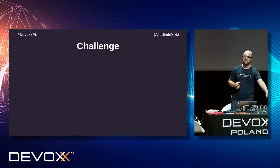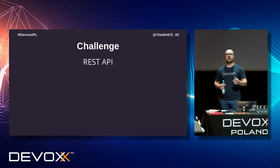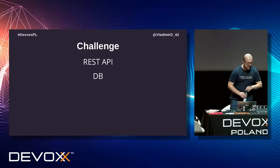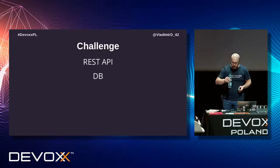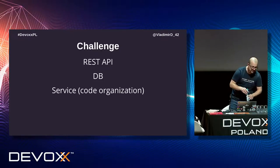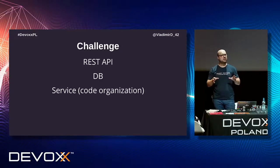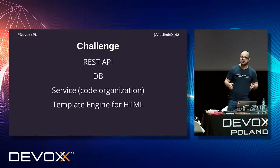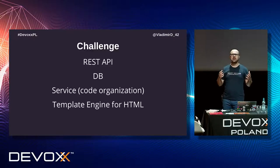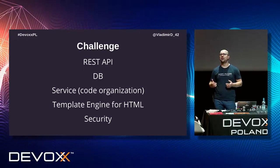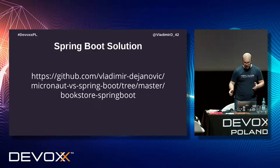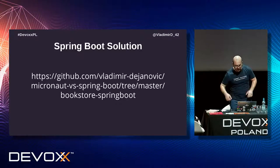I created a small challenge that consists of the following: I want to build a REST API. Second, I want to have a database - because if we don't have a database, what kind of application are we building? Third, I want to organize my code into services. Fourth, I want some way to serve static content and dynamic frontend, because maybe I want to build the full application in Java. And last but not least, I need security. The good thing is the code for Spring Boot is already online at this URL, so let's look at the code.